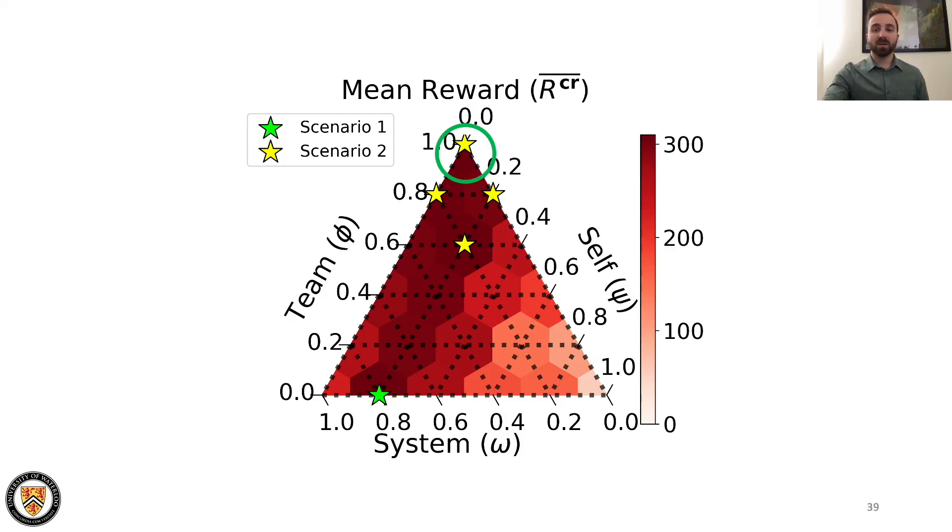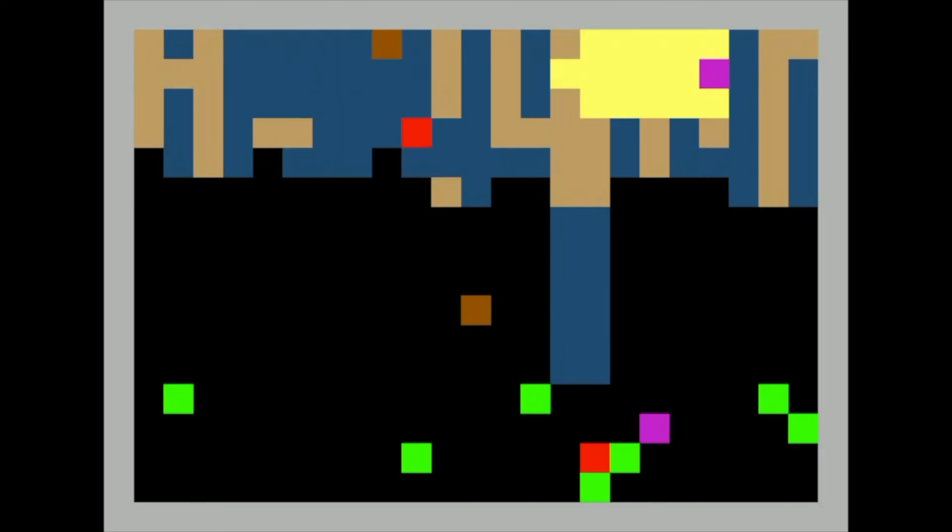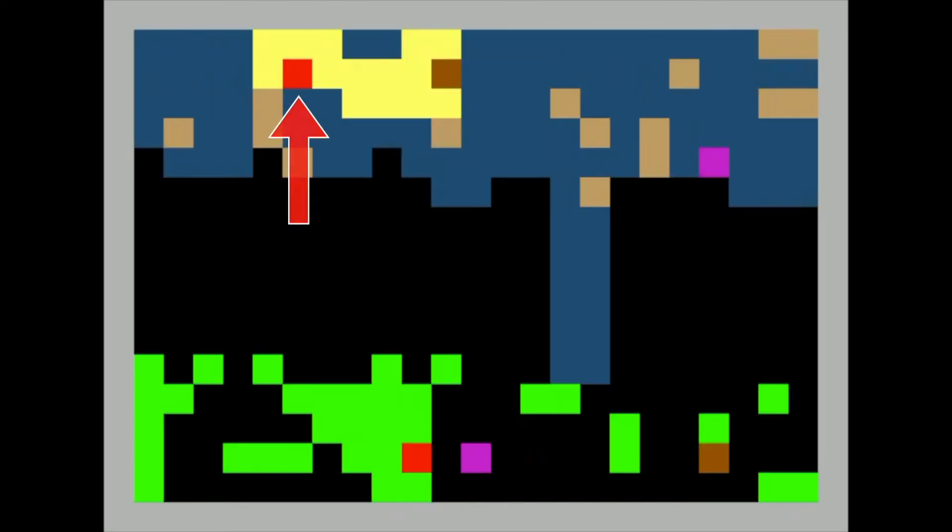However, we find that even higher mean population reward is obtained when agents are fully team-focused within their component teams. In this scenario, agents share their reward function with only their teammate. Just like the fully system-focused scenario, agents first divide the labor into three river cleaning and three apple picking agents, coordinating with their teammate so that one does each role.